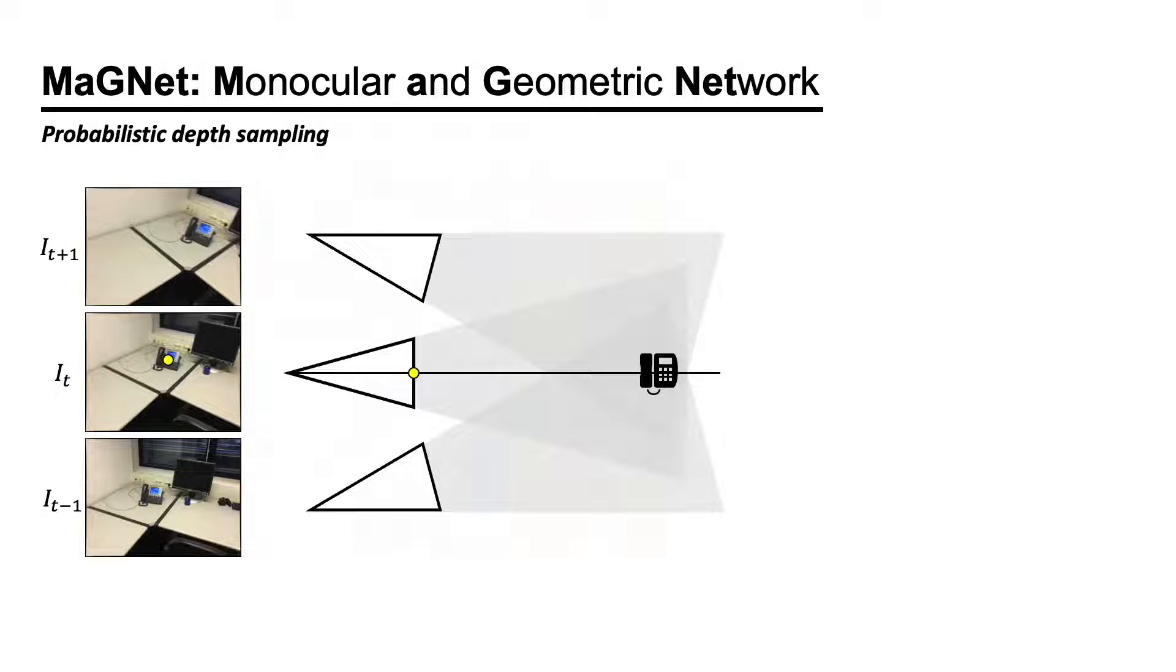Firstly, we propose probabilistic depth sampling. Instead of sampling the depth candidates uniformly, we estimate the single-view depth probability distribution, define the search space, and sample a small number of depth candidates. This improves the efficiency of the multi-view matching.